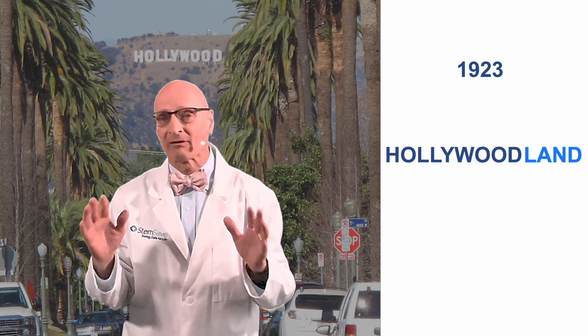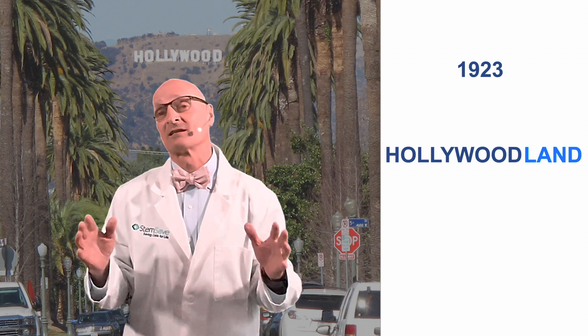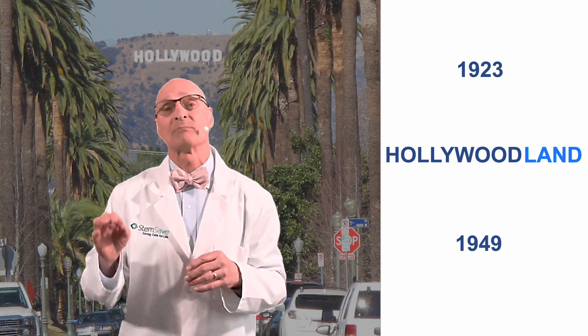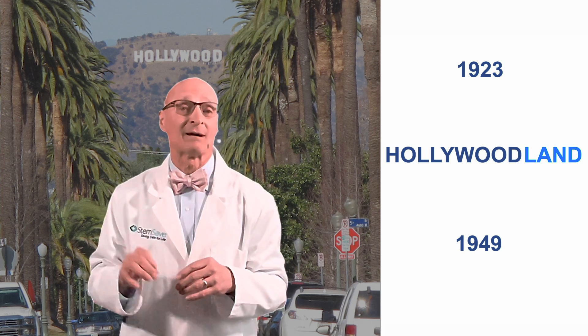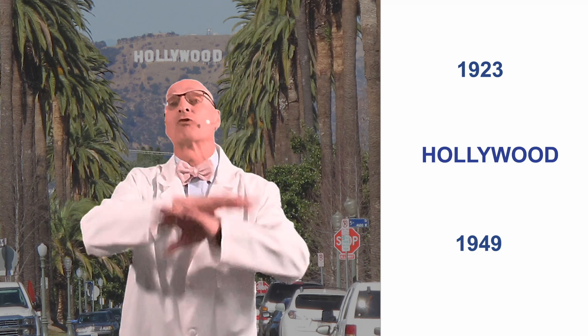Sidebar about the sign. It was constructed in 1923 and originally read Hollywood Land and was constructed as a temporary billboard for a local real estate development. It wasn't until 1949 that the city of Los Angeles decided to make the sign permanent, but only after dropping the land part. And now it's an icon recognized around the world.